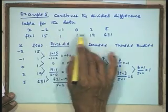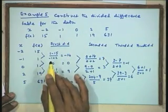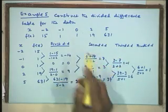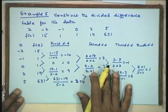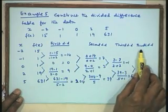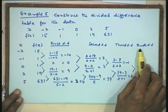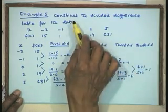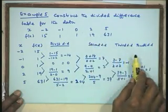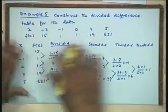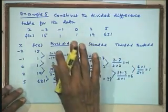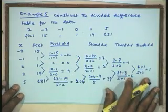An important property: if the data lies on a polynomial of degree less than n, the higher-order divided differences will automatically become zero. For instance, if all points lie on a straight line, differences of order 2 and above vanish. The divided difference table itself indicates whether the data corresponds to a full-degree polynomial or one of lower degree.